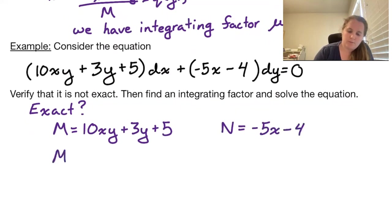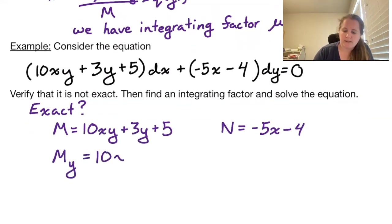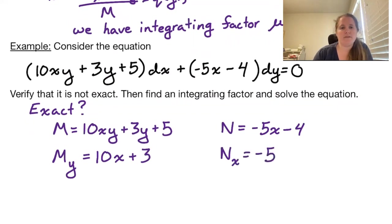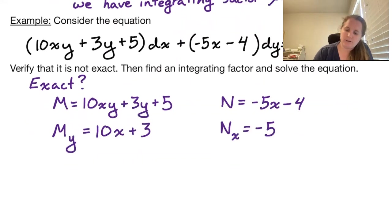Finding the partial of M with respect to y gives us 10x + 3. Finding the partial of N with respect to x gives us simply -5. These two are definitely not equal to each other, so this equation is not exact.